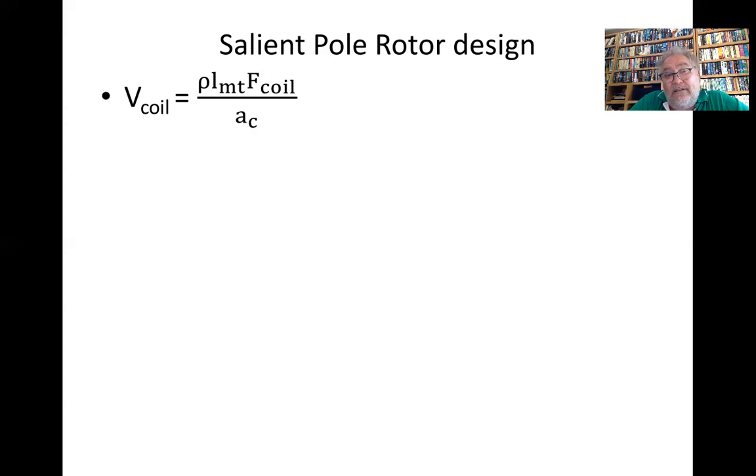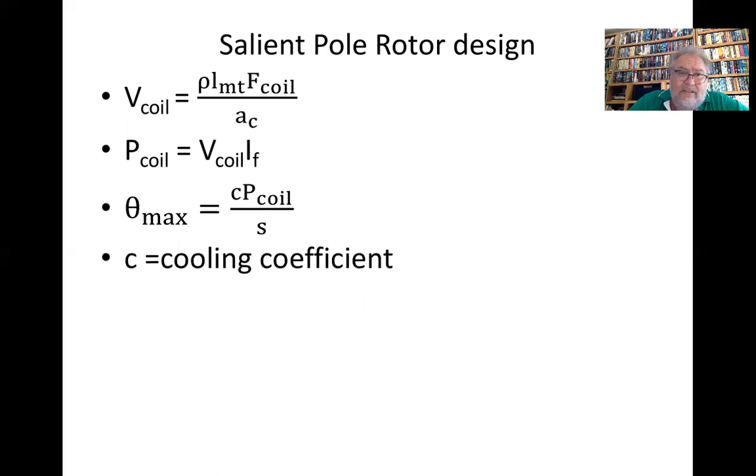So we have voltage of the coil is ρ l_mt I_f times n_coil over A_c. V_coil × I_f, maximum temperature is C times P_coil divided by S, where C is our cooling coefficient.